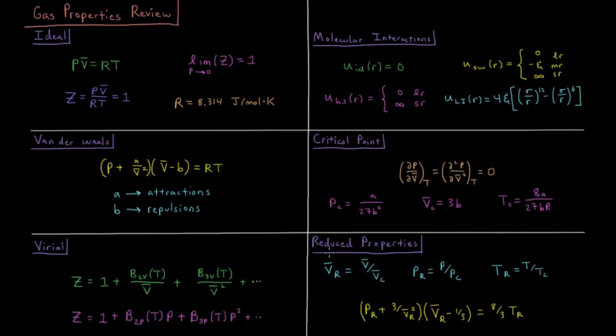Then finally we have the reduced properties, where each reduced property is the property divided by its critical value. So reduced molar volume is molar volume divided by critical molar volume, etc.